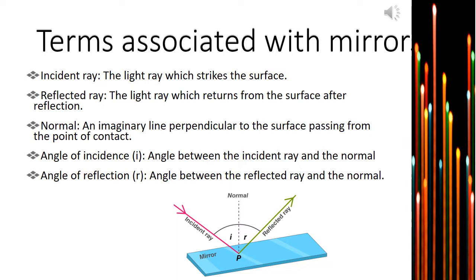In green color, you have the reflected ray, which can be defined as the ray of light that gets reflected from the surface of the mirror or reflecting surface. In between, you can see a dotted line which is labeled as normal. It can be defined as the imaginary line or perpendicular line that is drawn from the point of incidence.